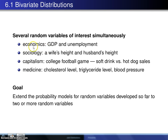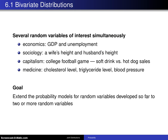Here are three quick examples. In economics, you have two random variables, namely gross domestic product and unemployment, that could be viewed simultaneously. When unemployment goes up — when you have more people unemployed — then your gross domestic product is certainly going to go down. And so these two variables might be negatively correlated.